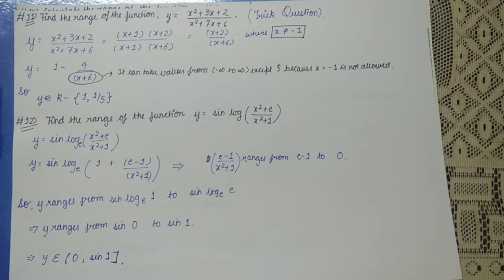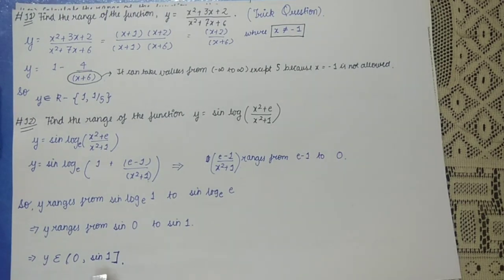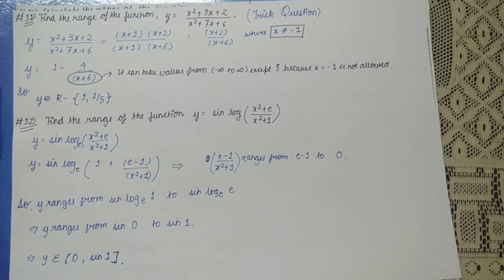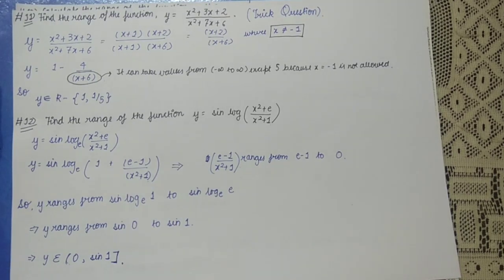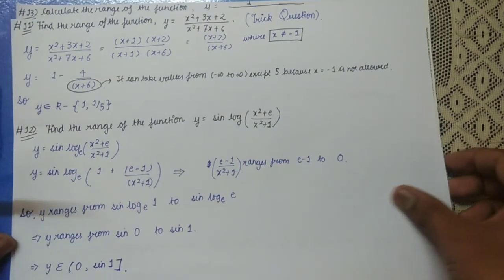The two endpoints are 0 and sin 1. Since x = 0 is attainable, sin 1 is included. Since x = ±∞ is not attainable, y = 0 is not included. Therefore the range is (0, sin 1].